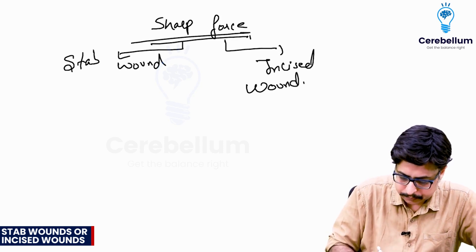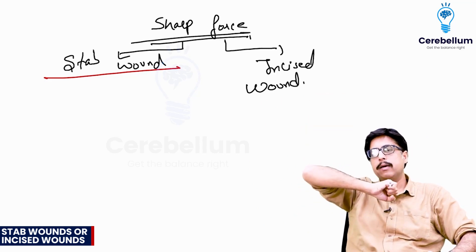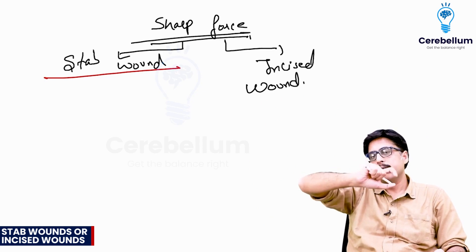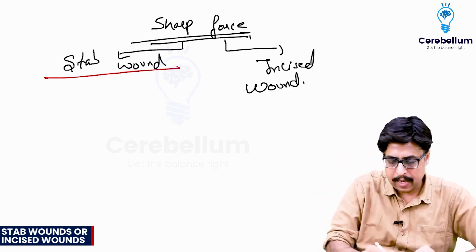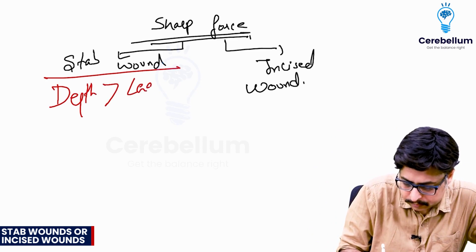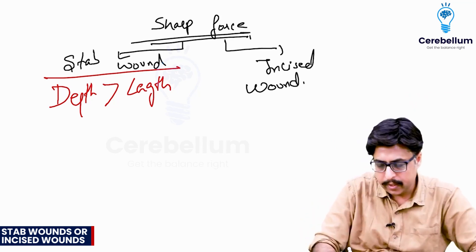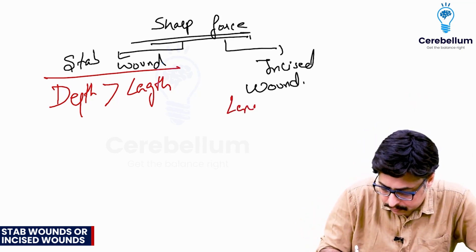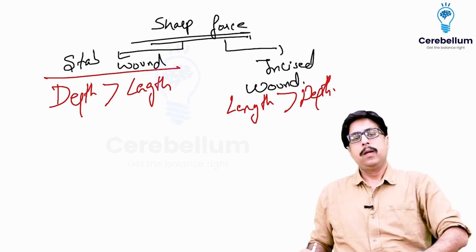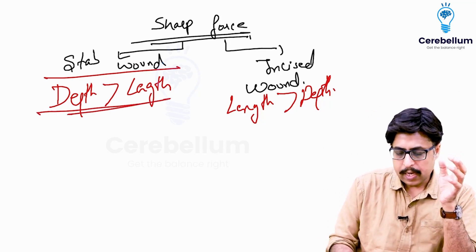What's the difference? A stab wound goes like this. Which dimension will be greater — length, depth, or width? In a stab wound, depth is greater than length. Whereas in an incised wound, it is like this — the length is greater than the depth.